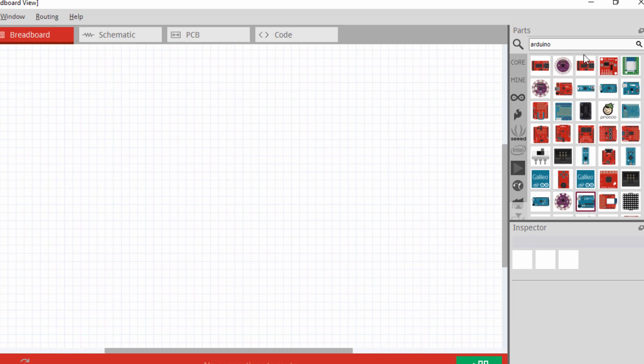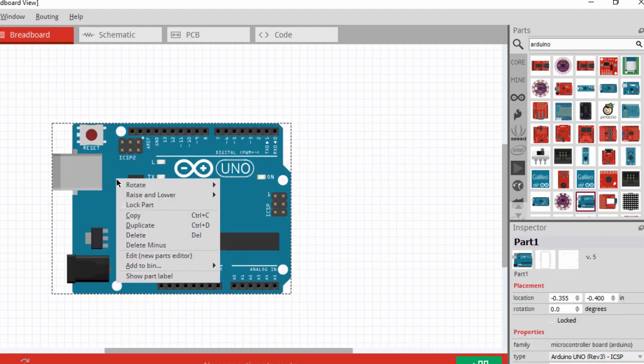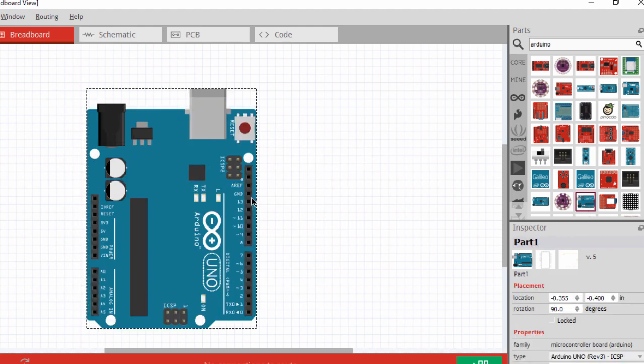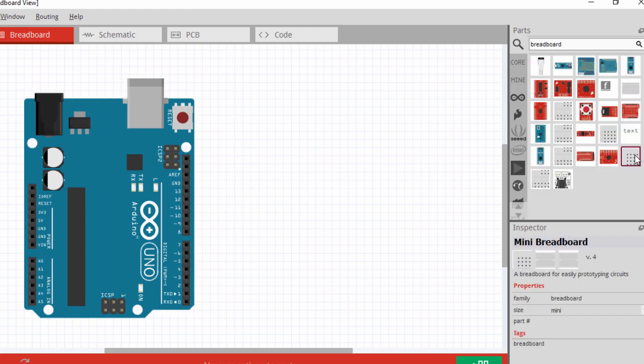The first thing we're going to need is an Arduino. We're going to use the Arduino Uno, but any other Arduino board can be used as well. The second thing is going to be our breadboard. You can also connect the switch directly to the pin of the Arduino board, but we're going to prefer to use an external breadboard.